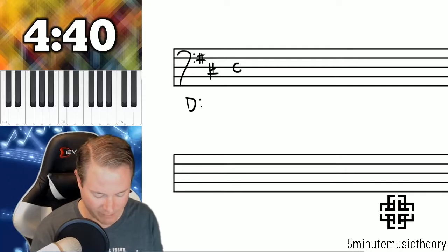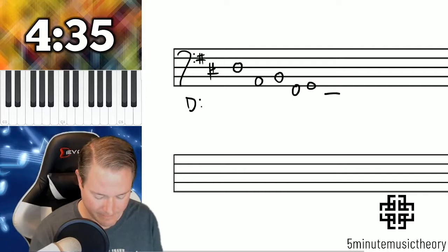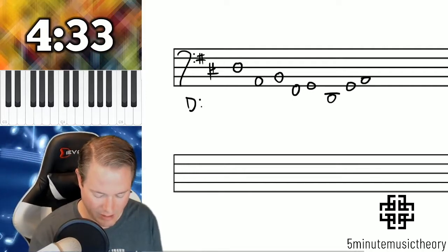And these are all going to be root position chords for this example. D, G, A. There we go. So we're going from a tonic to a dominant,